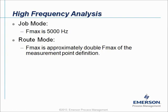The High Frequency Analysis module can be accessed from two different starting points. If you start this module in the job mode, there will be a spectrum measured with a default Fmax of 5000 Hz. However, if you start the same application from the root mode, there will be an additional spectrum measured and stored with approximately double the Fmax that was specified in the measurement point definition.